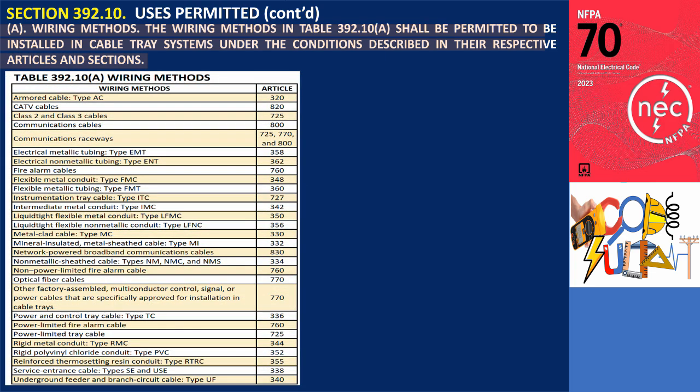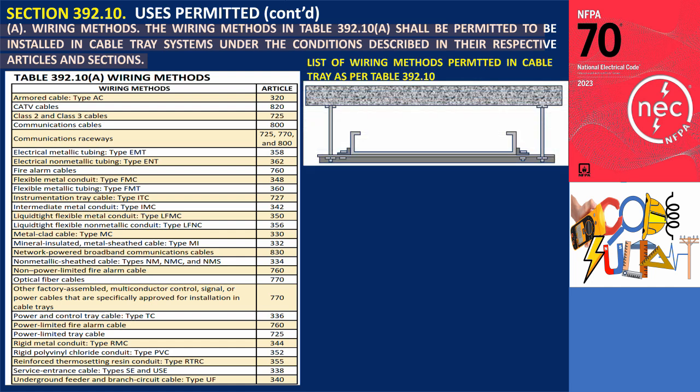Section 392.10(A) Wiring Methods. The wiring methods in Table 392.10(A) shall be permitted to be installed in cable tray systems under the conditions described in their respective articles and sections. Table 392.10(A) provides a comprehensive list of wiring methods allowed for use with cable trays, detailing various types of cables and conduits along with their corresponding articles.